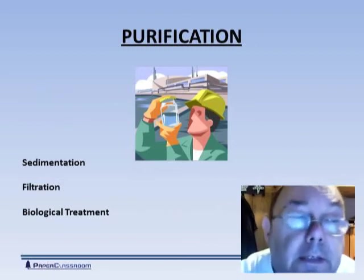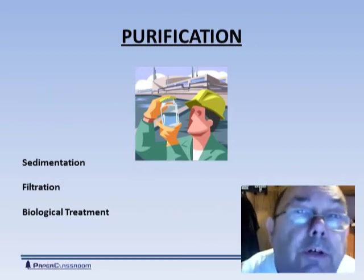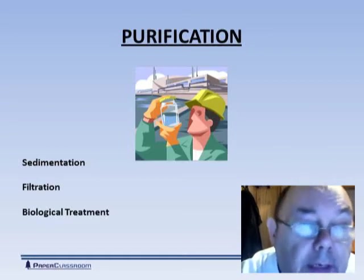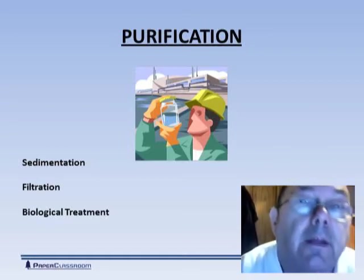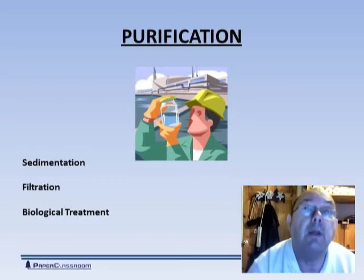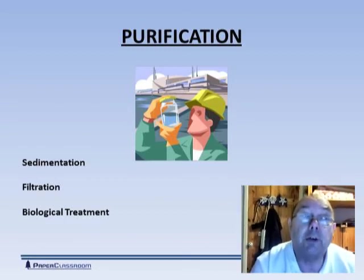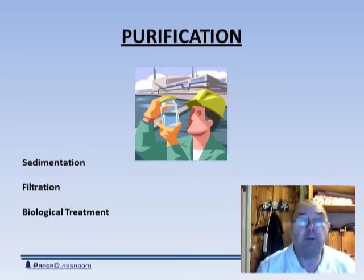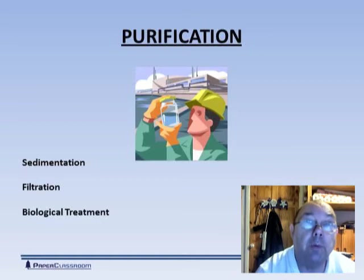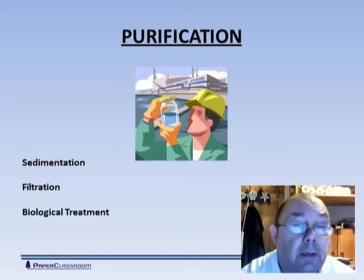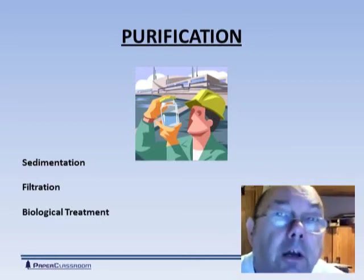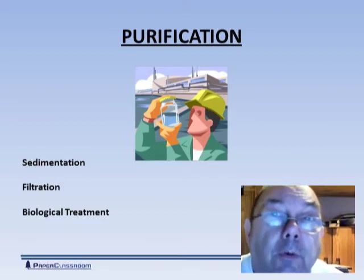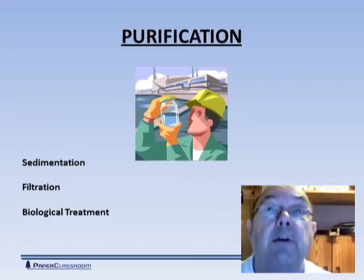Having got this contaminated water, what are the principles that we use to remove the contamination? Typically, as you can see, it's sedimentation, filtration, and then biological treatment. Biological treatment could be things like bleaches, biologically active chemicals, or treatment with something like ultraviolet light.